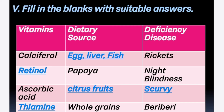5th section: Fill in the table with suitable answers. 1st: Calciferol is also known as vitamin D. It is found in egg, liver, fish, etc. Deficiency of vitamin D causes the disease rickets. 2nd: Retinol is vitamin A. It is found in papaya, fruits, and vegetables. Deficiency of vitamin A leads to night blindness — meaning we cannot see in dim light.